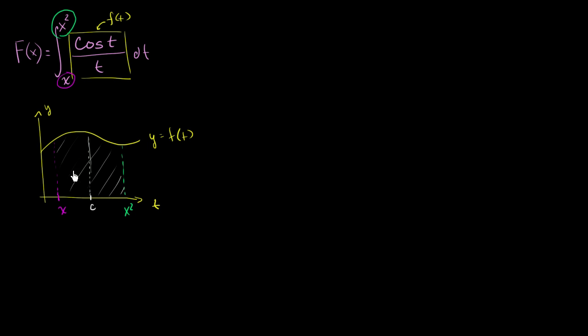So that same exact whole area, we can now write as two separate integrals. So one integral that represents this area right over here. And then another integral that represents this area right over there. And where we just say c is some constant between x and x squared. Well, how can we denote this area in purple? Well, that's going to be equal to the sum of these two areas. The purple area we can show is the definite integral from x to c of our function of t, cosine t over t dt.